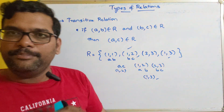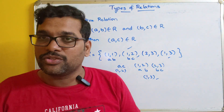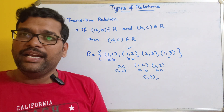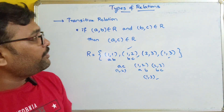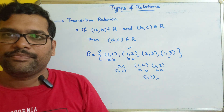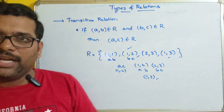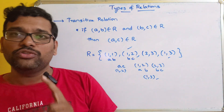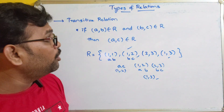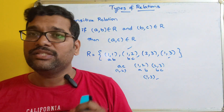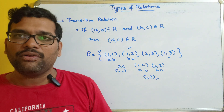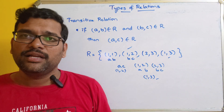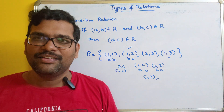These are all the different types of relations. We have seen empty relation, inverse relation, universal relation, reflexive relation, identity relation, symmetric relation, anti-symmetric relation, and finally the transitive relation. Two more types of relations are there — equivalence relation and partial ordering relation — which we will see in our next session. Hope you understood these types of relations. If you have any doubts, feel free to post in the comment section. Like, share, and subscribe to our channel. Thanks for watching.